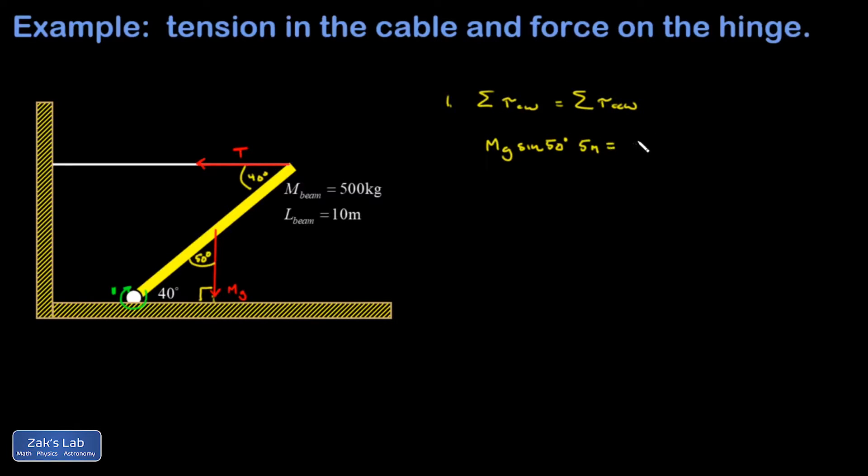Now my counterclockwise torque, that's going to be T sine 40. That's the perpendicular component of the tension. Multiply by the lever arm there, which is going to be the full 10 meters. And plugging in the rest of the numbers, I have 500 for M, 9.8 for G, sine 50 times 5 equals T sine 40 times 10. And I smash all the numbers into a calculator, and I get 2,920 newtons for the tension in the cable.